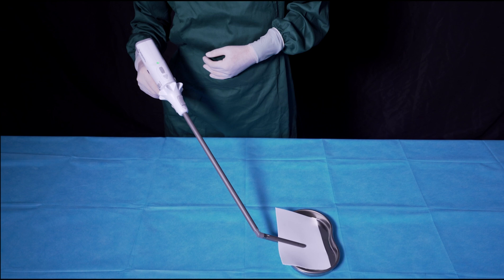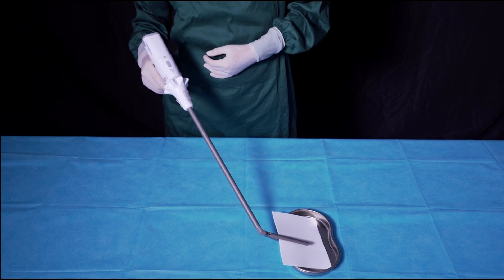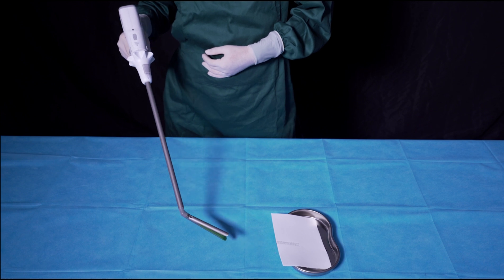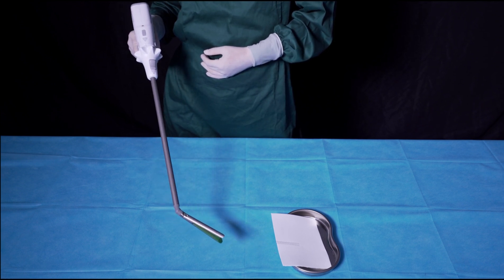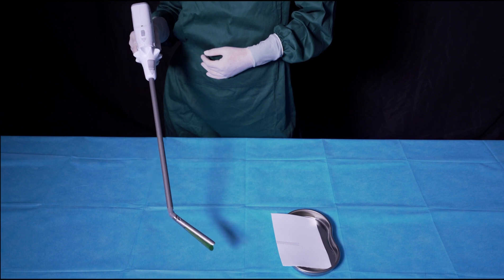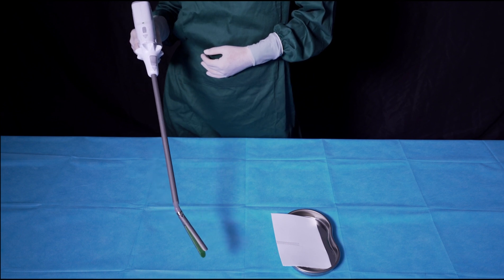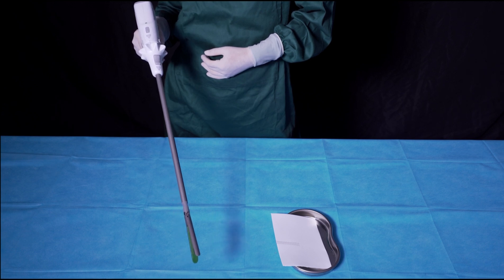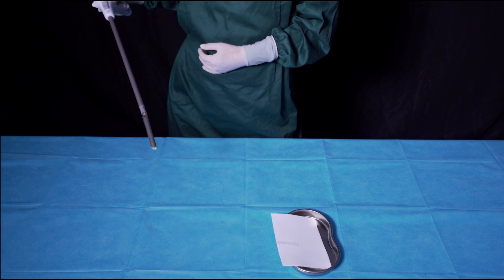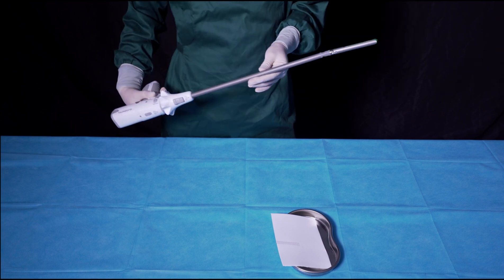After the anastomosis, press the reverse button to withdraw the knife and open the jaws before removing the stapler. Keep the jaws open within the range of visibility. If firing under articulation, long press the deflection button to get the jaws returned to the middle. Long press the close button to close the jaws and take the stapler out.